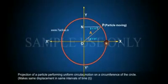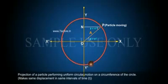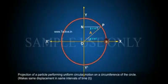Projection of a particle performing uniform circular motion on the circumference of a circle makes the same displacement in the same intervals of time, T.